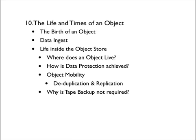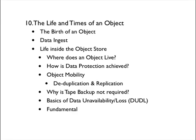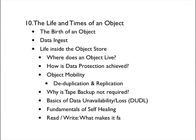An interesting facet of object stores is that they claim to not require tape backup, which is obviously a huge plus. So we'll look at understanding why this would be the case. Every design has failure points — in storage, the biggest of these result in data unavailability or worse, data loss. We'll walk through how these manifest and why, and then get into how a system can recover from such errors through a process of self-healing. Finally, we'll talk about performance and discuss what makes these systems faster or not.